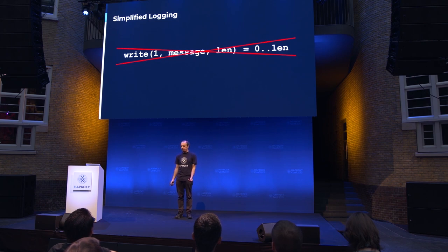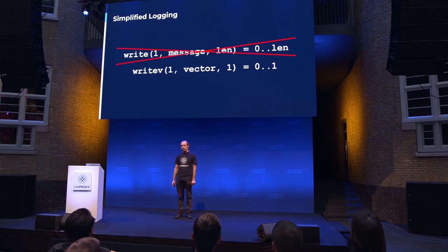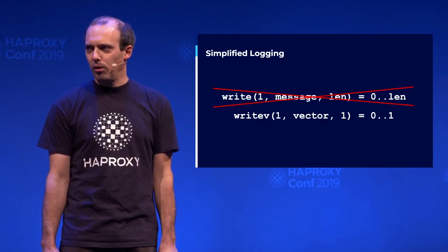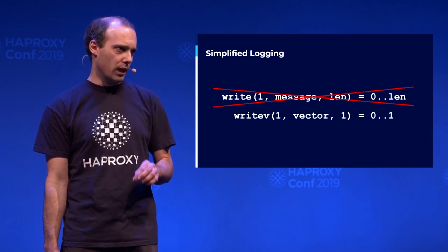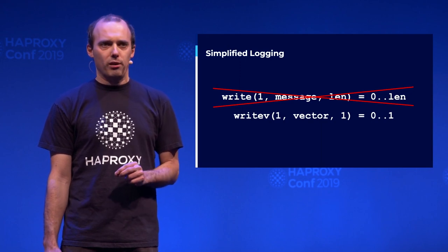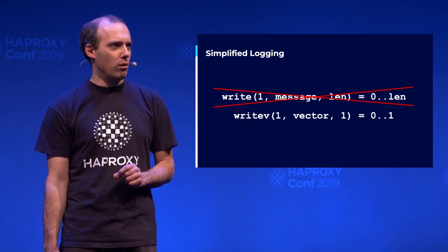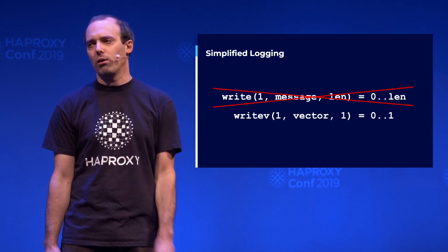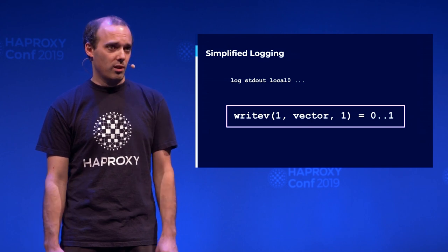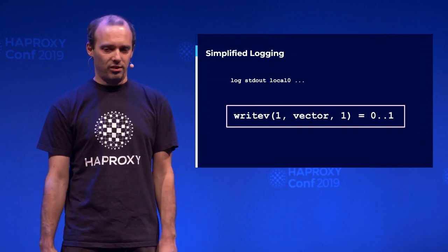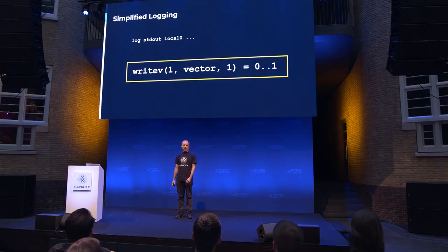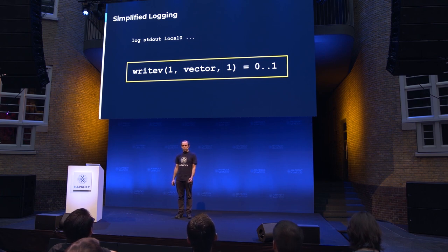The real problem is that you cannot have an atomic write. But recently I had another idea. There is another syscall called WriteV, which is used to write a vector — a memory block starting at a position with a given length. WriteV returns the number of vectors written, not the number of bytes. So I thought it must be atomic per vector. If I put my log message in a vector, it would either be entirely delivered or not at all. I ran the test and yes, it works. So now we finally have logs on STDOUT. The number of lost logs is simply accounted for in the stats. You no longer need to install syslogd in your containers.